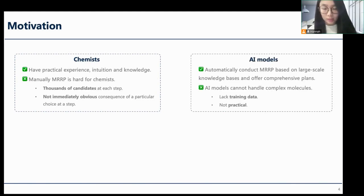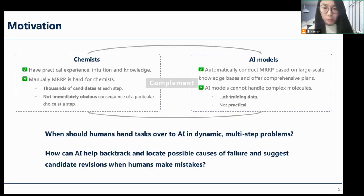Although there are existing AI-powered MRRP methods that can automatically conduct MRRP based on large-scale knowledge bases and offer more comprehensive plans faster than individual chemists, they are still limited in their capabilities to handle complex molecules. This is because little related synthetic route data are available for AI model training, and they often fail to take practical factors into account. In these cases, the MRRP still needs to be carried out by human experts. Despite this, we believe that AI may take the weight off the shoulders of chemists in the MRRP process when the target molecule becomes simple enough after a series of manual deconstructions.